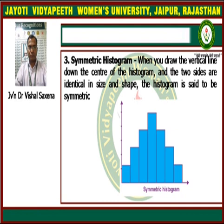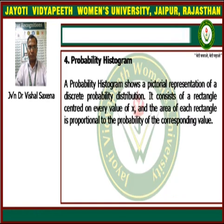Next is the symmetric histogram. In a symmetric histogram, if we draw a vertical line down the center of the histogram, the left side and the right side are identical in size and shape — they are exactly symmetrical. The two sides on the left and right of this vertical line are exactly identical in their shape and size. Such a histogram is known as the symmetric histogram.